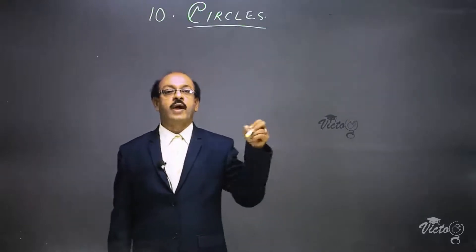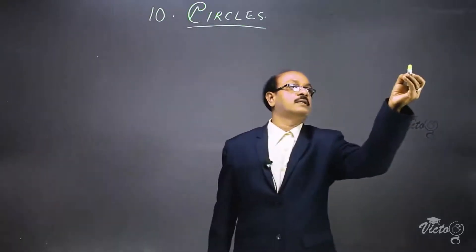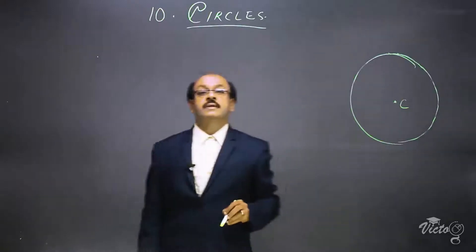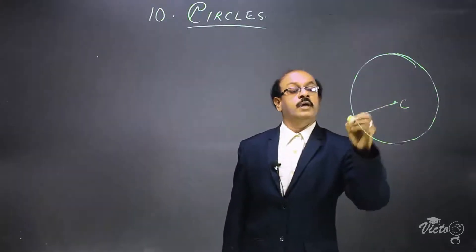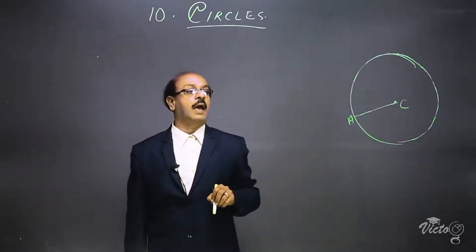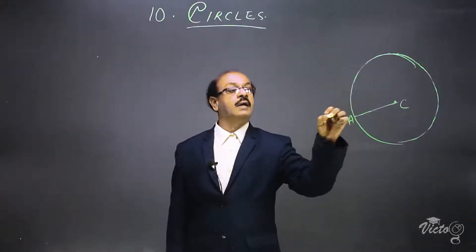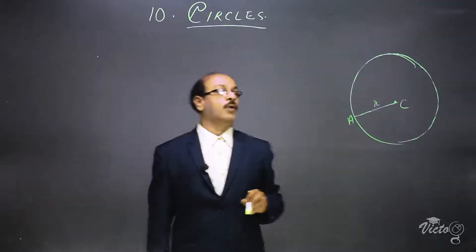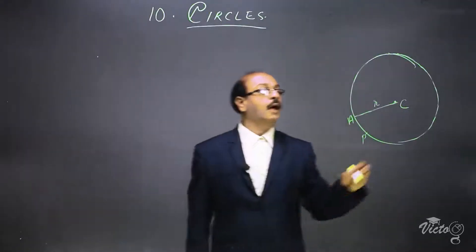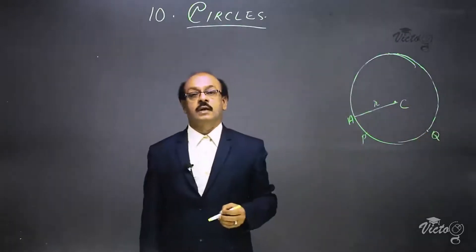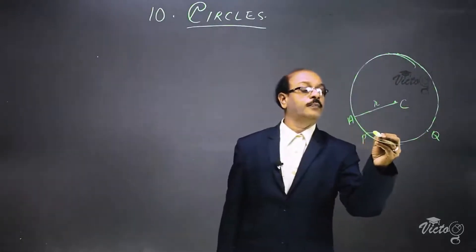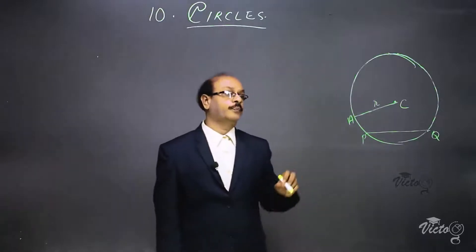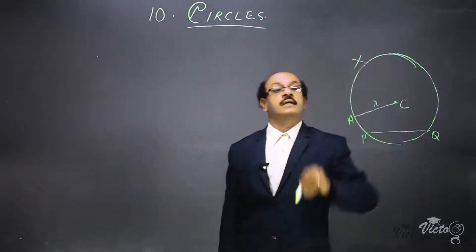Here is a circle. This is the center, put it as C. Now if A is a point on the circle, the line segment joining the center and point A is called its radius, generally denoted by small letter R. Now P is any point on the circle and Q is another point on the circle; the line segment joining P and Q is called a chord of the circle.